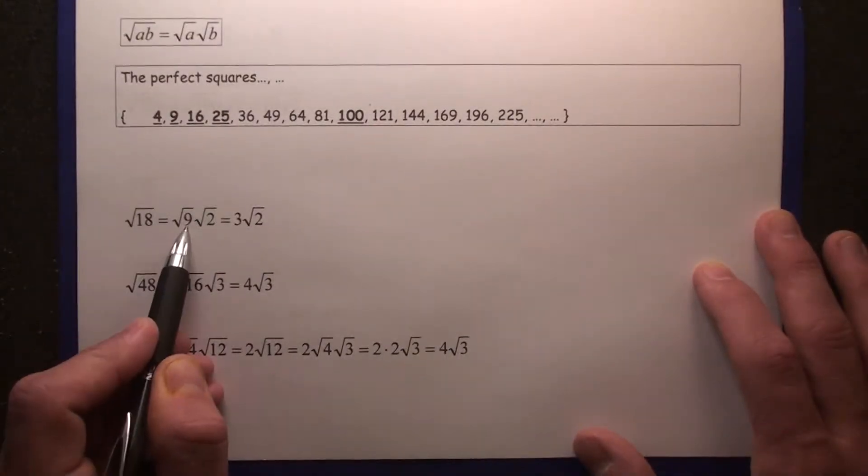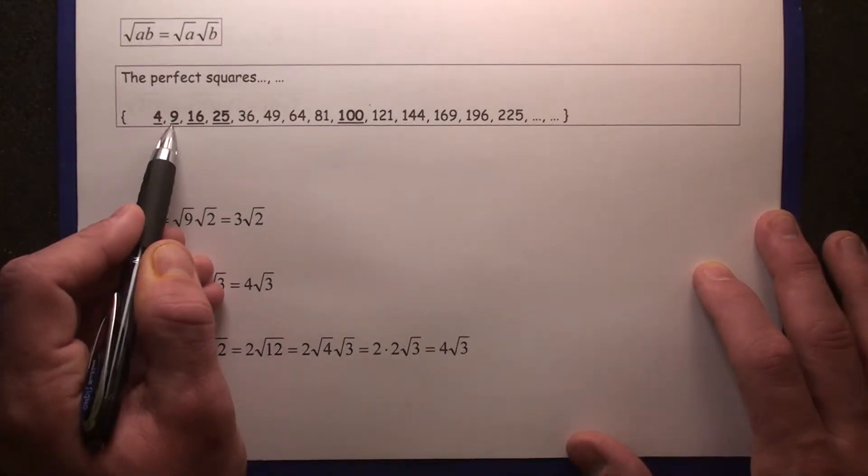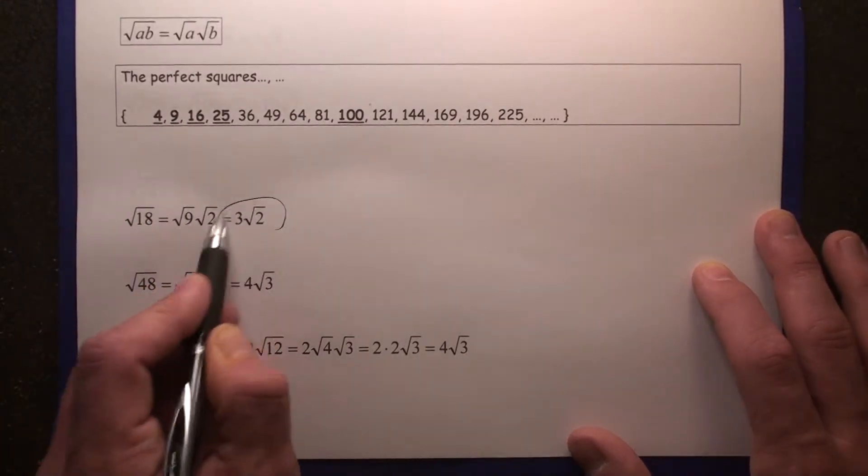The square root of 18 equals root 9, root 2. We're using root 9 because 9's on our list. The square root of 9 is 3, so the answer is 3 root 2.